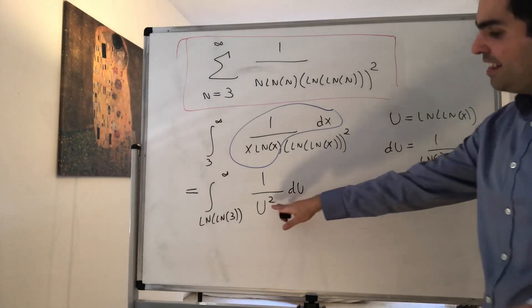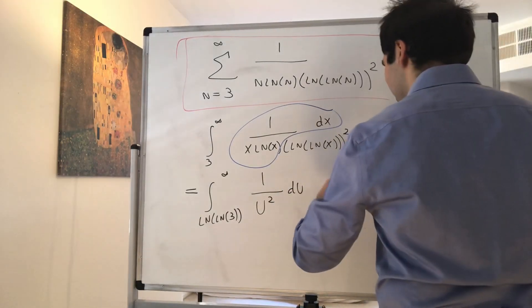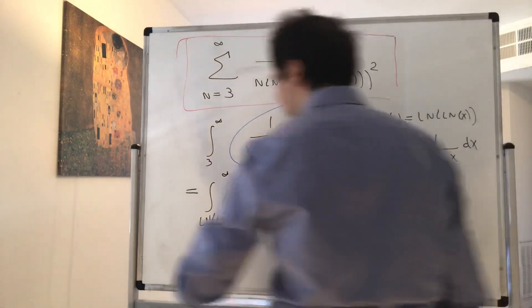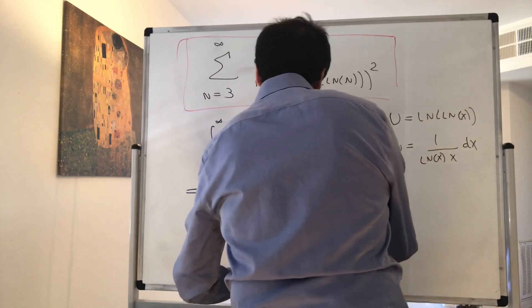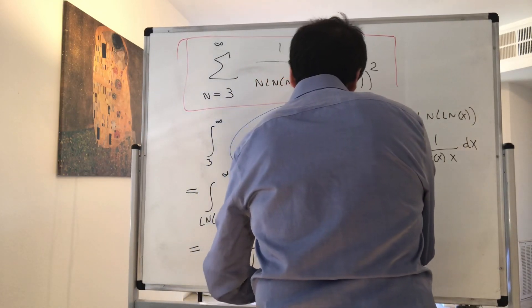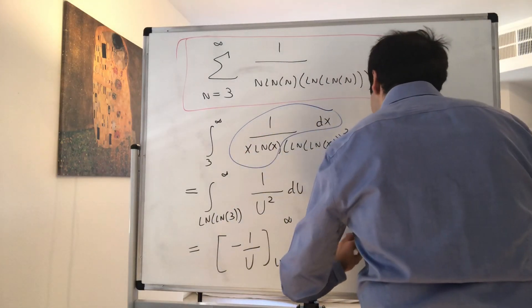But this time, in this case, the integral actually converges. So this converges, again, if you'd like, because an antiderivative is minus 1 over u from ln of ln of 3 to infinity, which just becomes 1 over ln of ln of 3.